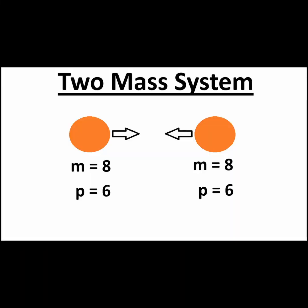Consider an example where there are only two massive bodies in a system. Both have the same mass and both are moving toward each other with equal and opposite velocities.